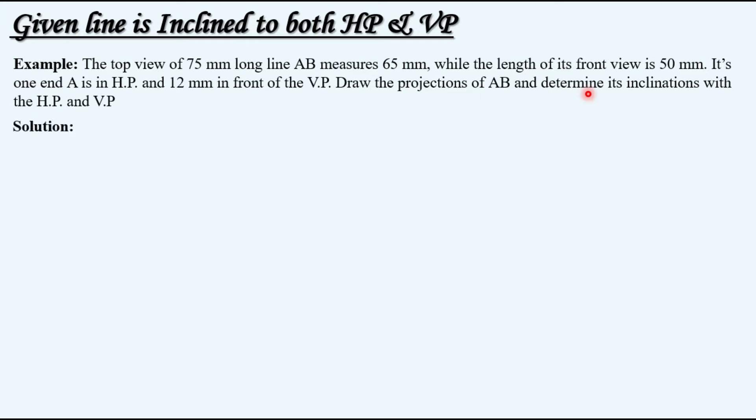Let's extract the given data first. So the name of the line is AB. The question is a bit confusing but in order to make things simple, here three dimensions are given. One is the true length, second is your top view length and third is your front view.